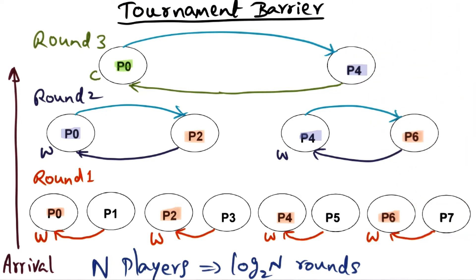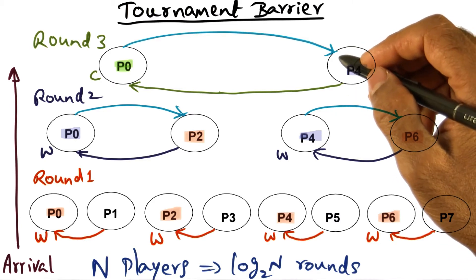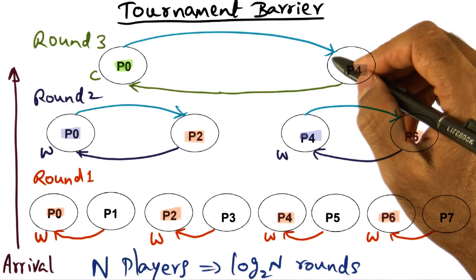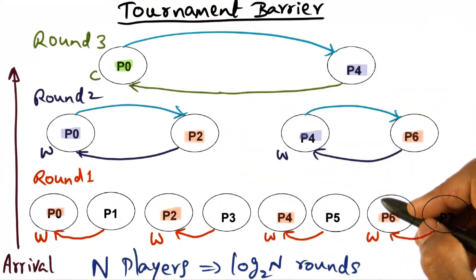So again, this is important for NCC NUMA machines, in which there is no cache coherence, and therefore, it is convenient if P4 can be spinning on a memory location that is close to the processor. Same thing with P2 and P6 at the next level.